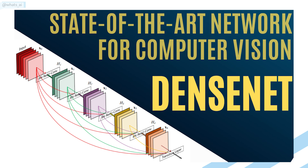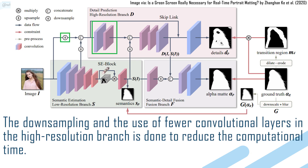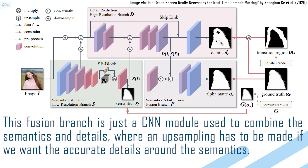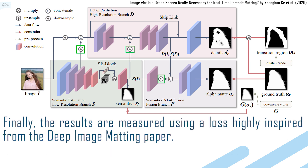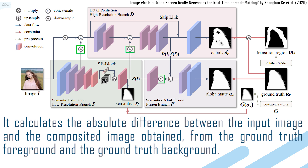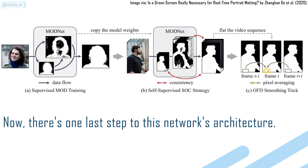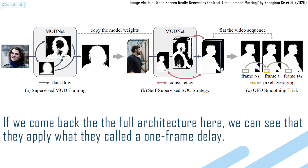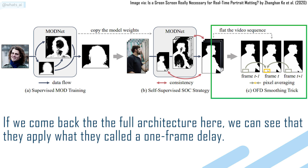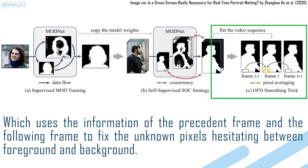The fusion branch is a CNN module used to combine semantics and details, where up-sampling is made to achieve accurate details around the semantics. The results are measured using a loss highly inspired by the Deep Image Matting paper — it calculates the absolute difference between the input image and the composited image obtained from the ground truth foreground and background. There is one last step: a one-frame delay, which uses information from the preceding and following frames to fix unknown pixels hesitating between foreground and background, preventing flickering artifacts.